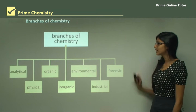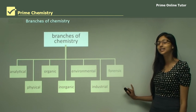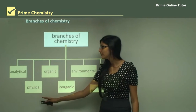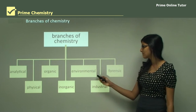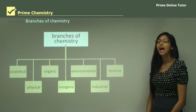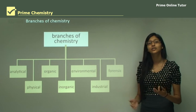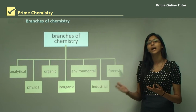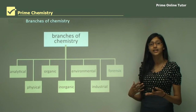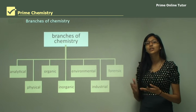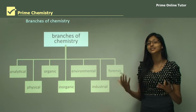As you can already see from this chart, there are seven major branches of chemistry: analytical, physical, organic, inorganic, environmental, industrial, and forensic chemistry. From the name we can already tell that each of these branches involves very different kinds of tasks. Now let's look at each of these branches separately and see what tasks they involve.